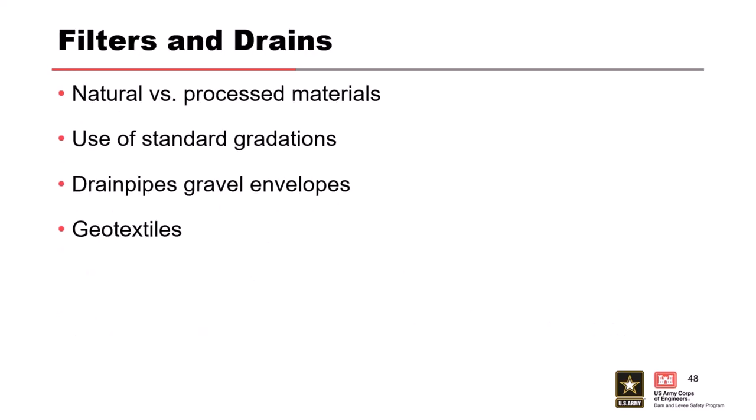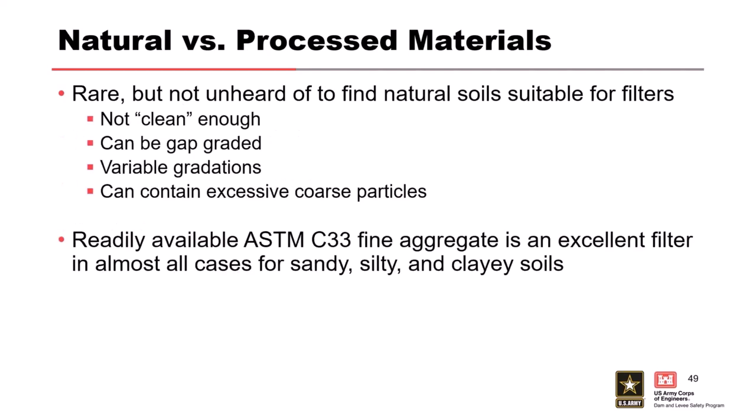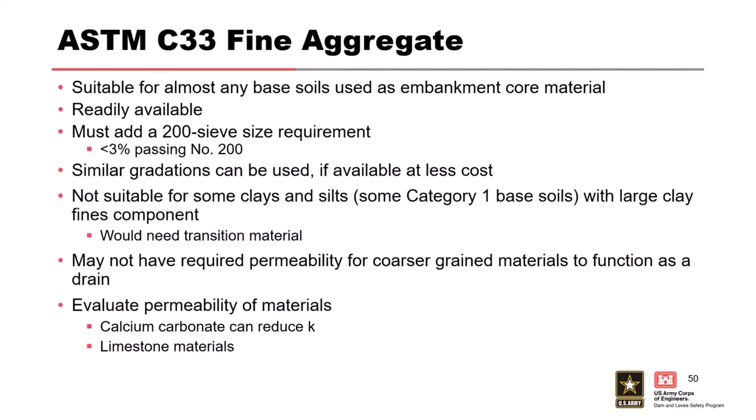These filter and drain slides were covered previously, so we'll go through them quickly. Natural versus processed materials: usually you'll get a processed, manufactured material. In hundreds of dams I've worked on, I've had one where an on-site sand and gravel was filter-compatible with the core — all 40 gradations fell right in the filter band. That saved a lot of money, but it's one out of a hundred. ASTM C33 is a great filter product.